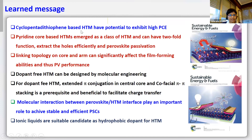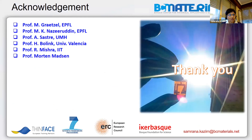In conclusion: cyclopentadithiophene-based HTMs have the potential to exhibit high power conversion efficiency. Pyridine core-based HTMs represent a new class with dual functions — efficient hole extraction and perovskite passivation. Dopant-free HTMs can be designed by molecular engineering, requiring extended pi-conjugation in the central core and cofacial pi–pi stacking to facilitate charge transport. Molecular interaction between perovskite and HTM interface plays an important role for stable and efficient devices. Ionic liquids are suitable as hydrophobic dopants for hole transport materials and can also be used as encapsulating agents for perovskite solar cells. Many thanks to all collaborators, my group, and everyone listening.